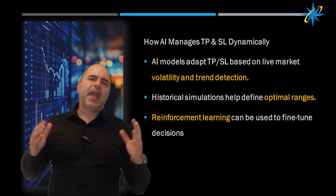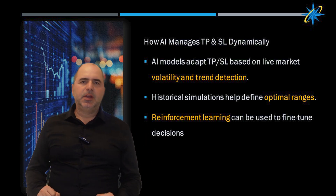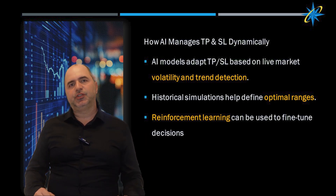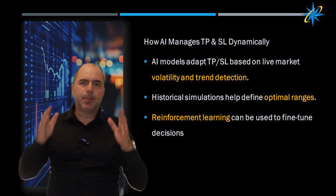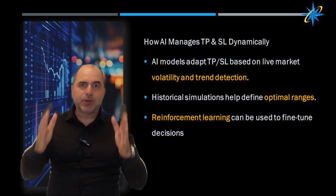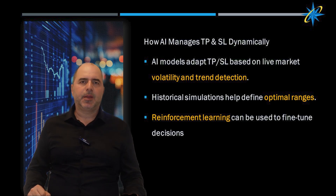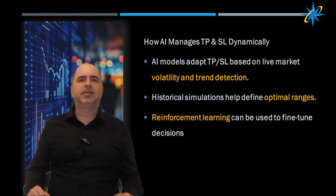Here is where AI makes the difference — it continuously tracks market conditions, dynamically adjusting your TP and SL based on current volatility and trend. This reduces human bias and improves response time. It's not just historical; it's real-time intelligence.